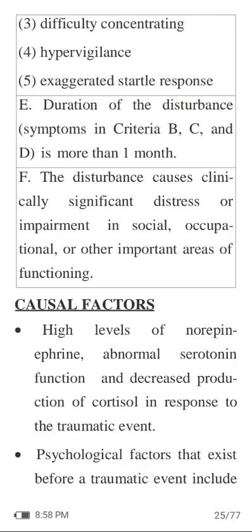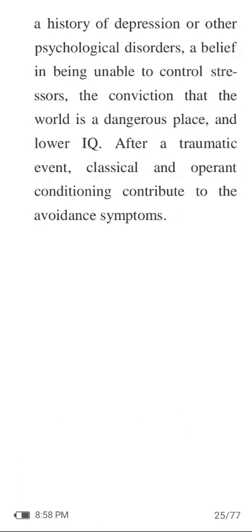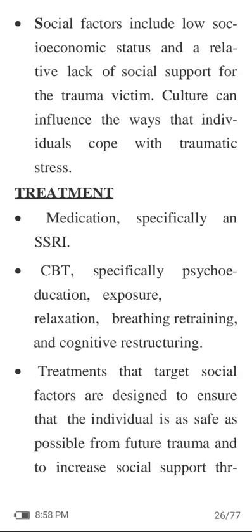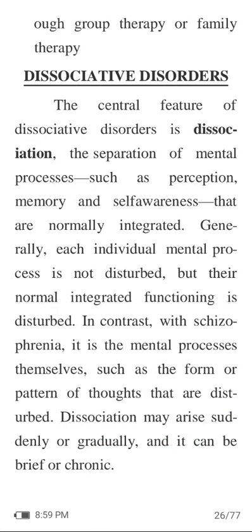Causal factors: high levels of norepinephrine, abnormal serotonin function, and decreased production of cortisol in response to the traumatic event. Psychological factors that exist before a traumatic event include a history of depression or other psychological disorder, a belief in being able to control stresses, a conviction that the world is a dangerous place, and lower IQ. After a traumatic event, classical and operant conditioning contribute to avoidant symptoms. Social factors include low socioeconomic status and a relative lack of social support for the trauma victim; culture can influence the ways individuals cope with traumatic stress. Treatment includes medication, specifically an SSRI, then CBT especially psychoeducation, exposure, relaxation, breathing retraining, and cognitive restructuring. Treatments targeting social factors are designed to ensure that the individual is as safe as possible from future trauma and to increase social support through group therapy or family therapy.